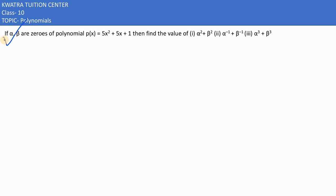Moving to the next part, alpha and beta are the zeros of the polynomial. This polynomial you have mentioned, and we need to find the value of alpha square plus beta square.